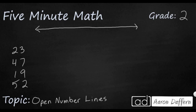I'll put least over here and greatest over here. An open number line is blank, but it doesn't stay blank for long. Our job is to use it as a tool to help with this particular problem. So I'm going to think of some boundary numbers — numbers that all four of these numbers fall between. I can put maybe 0 to 100, so those are my boundary numbers.